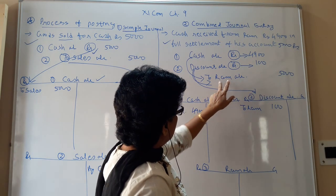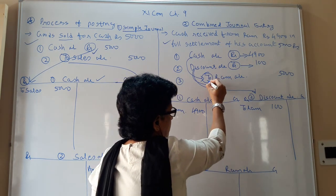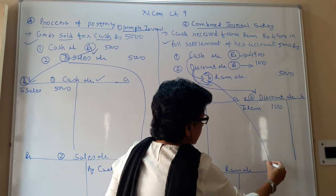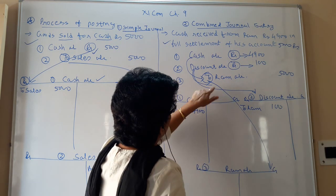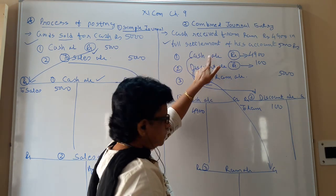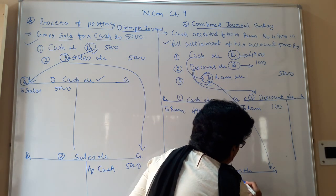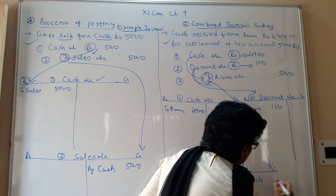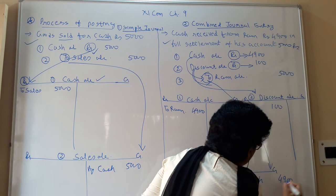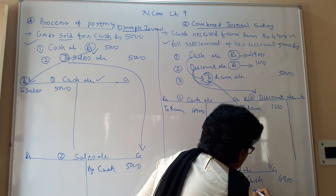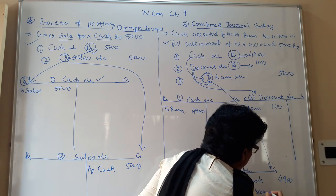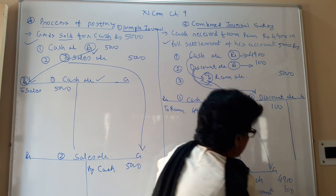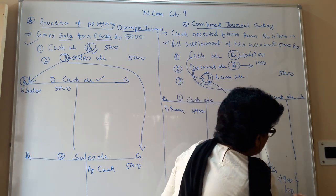Next is Ram. Ram is credited. So go to the credit side of Ram account. And which are the opposite accounts? One, that is by cash rupees 4,900. And second, by discount rupees 100. So here also your total is 5,000.